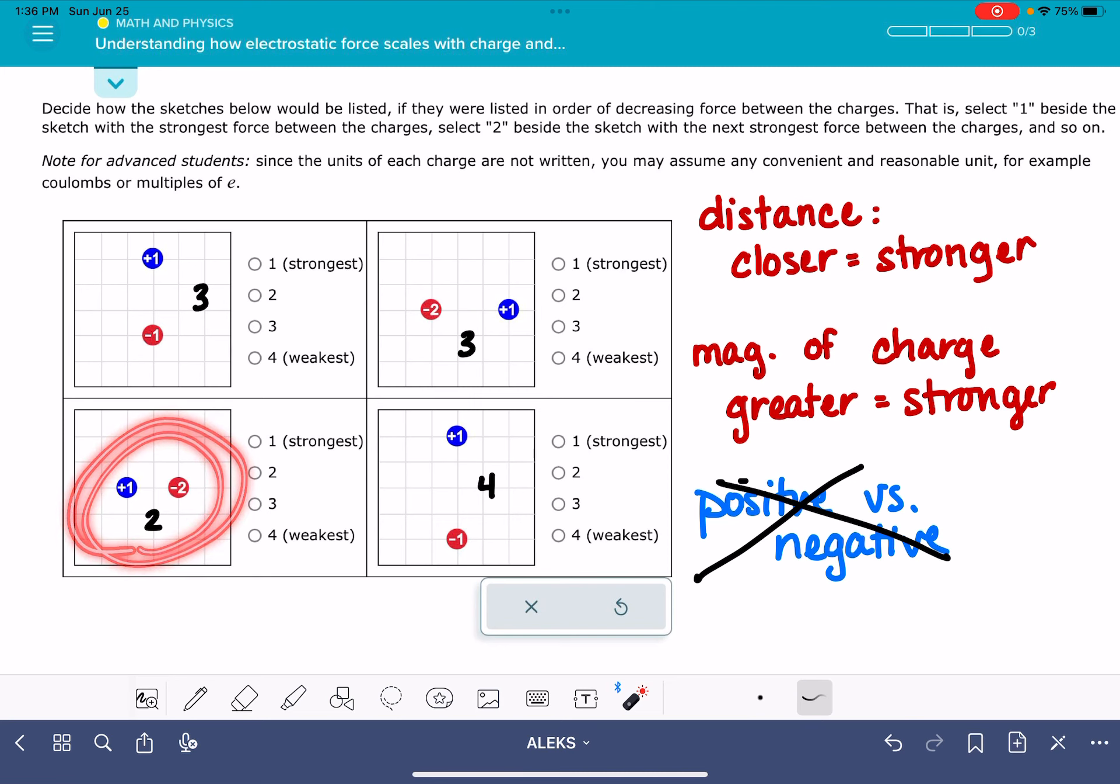These two are the ones that are closest together, and so they are going to be having the strongest forces between them. And these ones are the furthest apart, so they're going to have the weakest force between them.